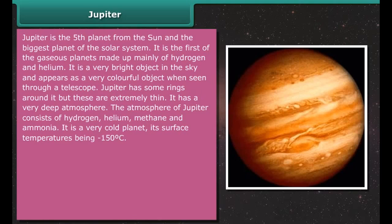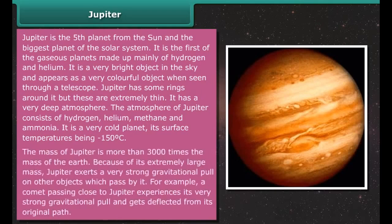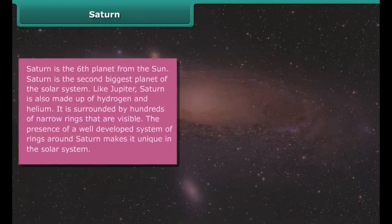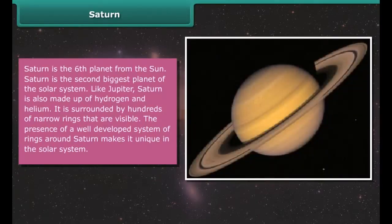Venus is the next planet nearest to the Sun and is the closest planet to the Earth. Venus is the brightest object in the night sky except the Moon, appearing bright because it reflects about 75% of the sunlight falling on it. The mass of Venus is 4/5 times that of the Earth, while both are nearly the same size.